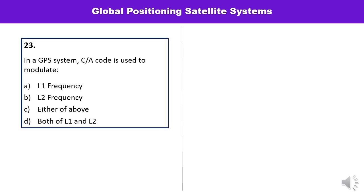Question number twenty-three: In a GPS system, C/A code is used to modulate which frequency — L1, L2, either of L1 or L2, or both L1 and L2? The C/A code is used to modulate the L1 frequency, so A is the correct answer.